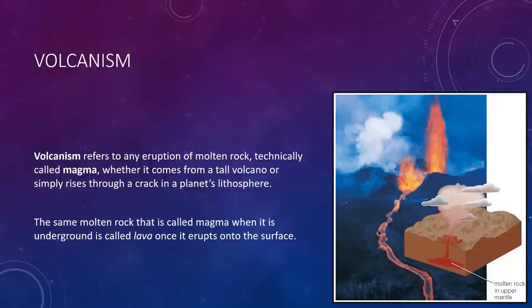Next is volcanism. We use the term volcanism to refer to any eruption of molten lava, whether the lava comes from a tall volcano or simply rises to the surface through a crack in the planet's lithosphere. Volcanism occurs when underground molten rock, typically called magma, finds a path to the surface, as you can see in this little cutout here on the right. The same molten rock that is called magma when it is underground is called lava once it erupts onto the surface.